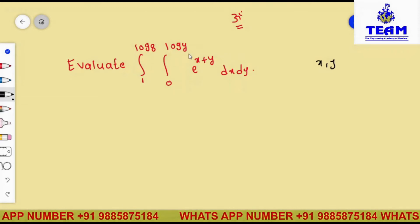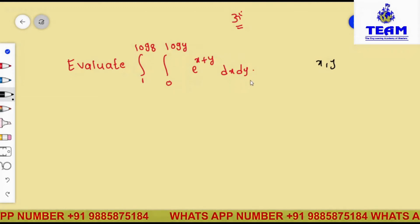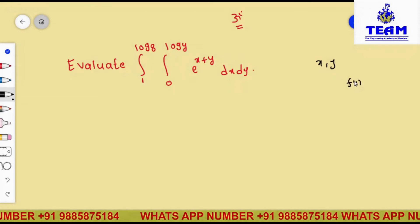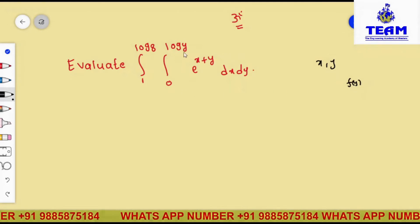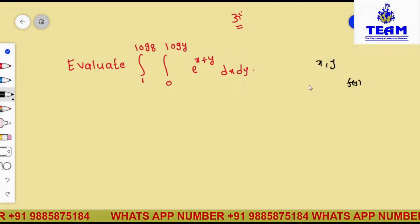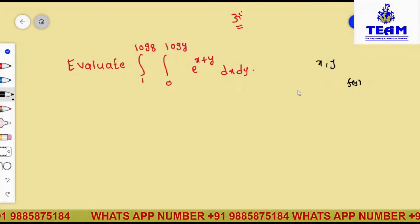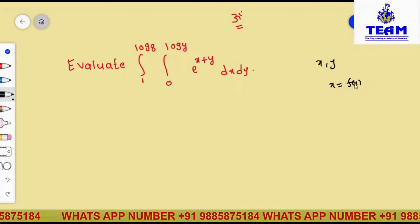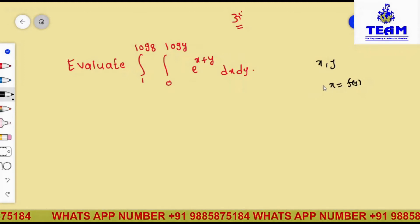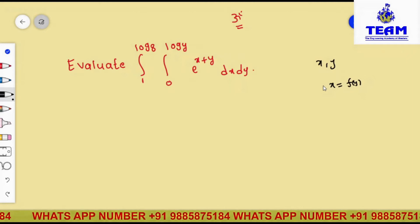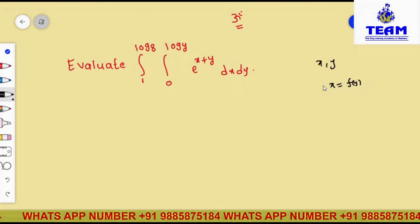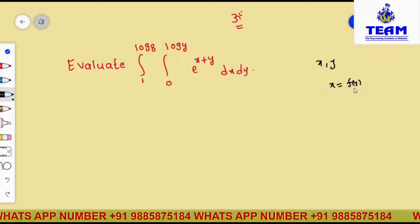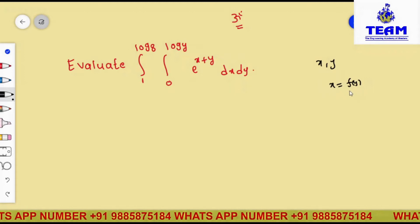Next, 0 to log y is a function of y — 0 is a constant but the upper limit is a function of y. So by observation, which limit is a function of y? Obviously the x limit is a function of y, and the y limit is independent. So x is dependent on y and y is independent.